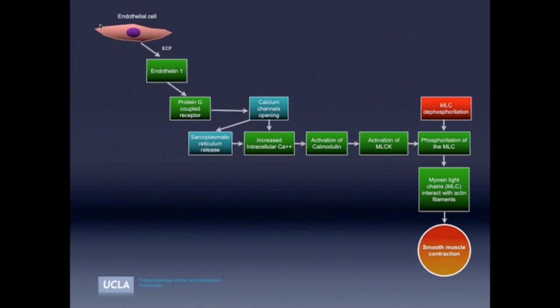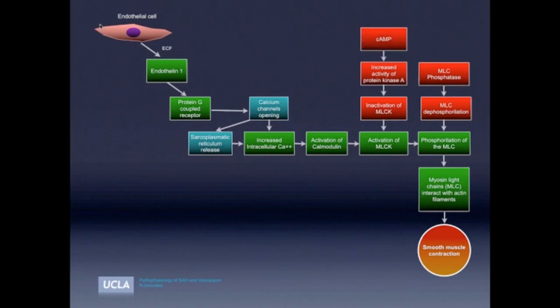Now, once the contraction of the cells occurs, the myosin light chain gets to be dephosphorylated, and this is due to the myosin light chain phosphatase. In addition, the myosin light chain kinase is inactivated due to an increase in the activity of protein kinase A, which acts by increased levels of cyclic AMP.